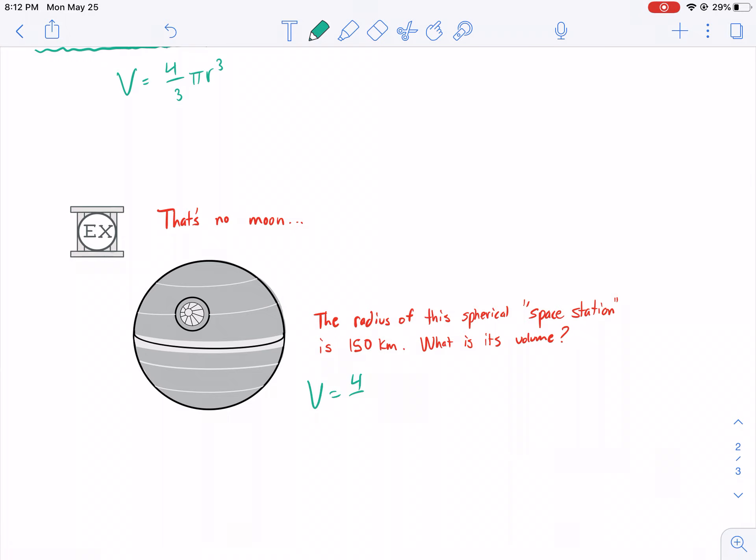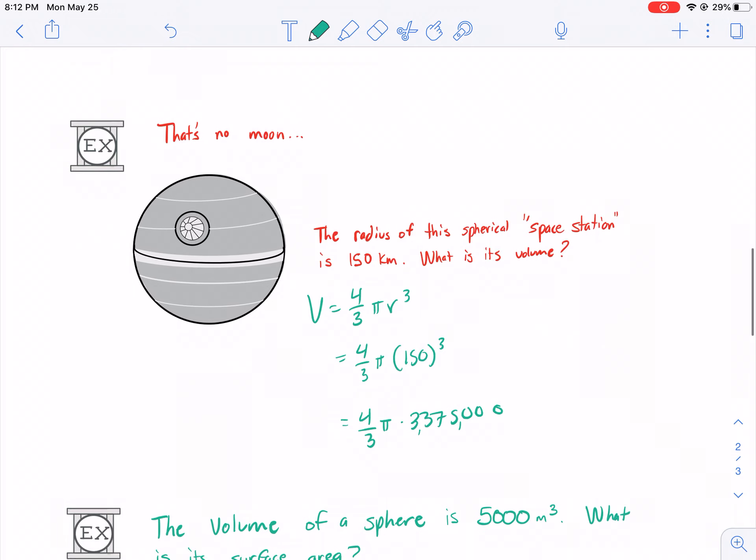Volume equals four-thirds pi r cubed. We have four over three pi. And then we have our radius, which is 150, and we're going to cube it. We're going to have some big numbers here. Maybe this was a mistake. 150, we're going to cube that. Oh, boy. We get four over three times pi times 3,375,123. That's 3,375,000.